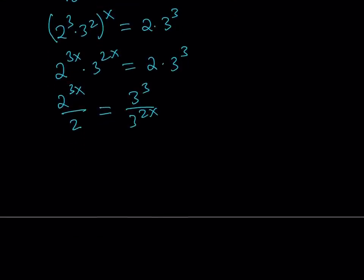Now by using rules of exponents if you divide two powers with the same base you subtract the exponents. So this is going to give me 2 to the power 3x minus 1 on the left hand side and on the right hand side I'm getting 3 to the power 3 minus 2x.